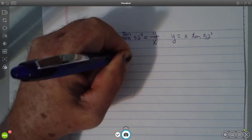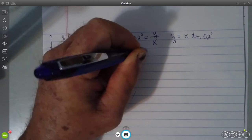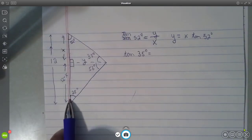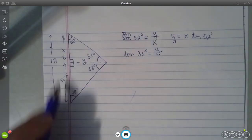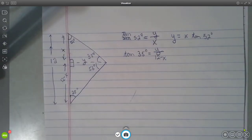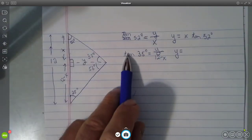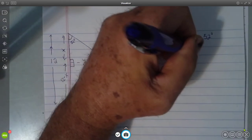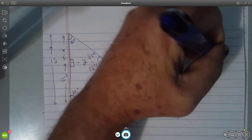The tangent of 35 degrees is equal to the opposite over the adjacent. And that tells me then that y is equal to this product, 12 minus x, times the tangent of 35.